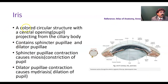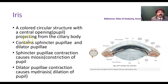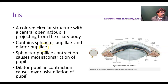We will go to the iris. A colored circular structure — this color varies from person to person, from race to race. It has a central opening or gap, which is called the pupil. The iris projects from the ciliary body and has a central gap that is called the pupil. It contains sphincter pupillae and dilator pupillae muscles.